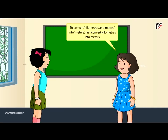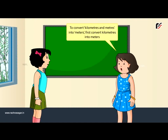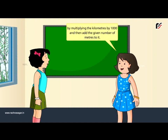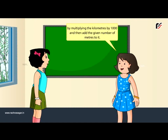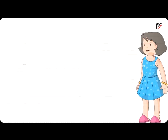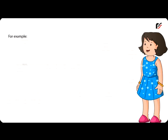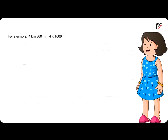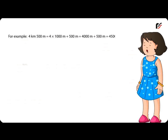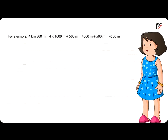To convert kilometers and meters into meters, first convert kilometers into meters by multiplying the kilometers by 1000, and then add the given number of meters to it. For example, 4 km 500 m = 4 × 1000 m + 500 m = 4000 m + 500 m = 4500 m.